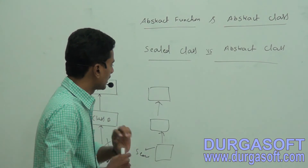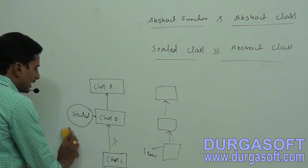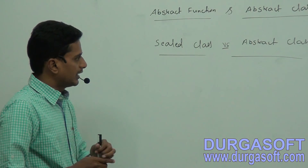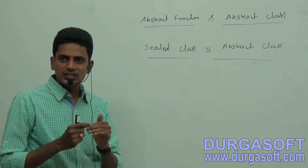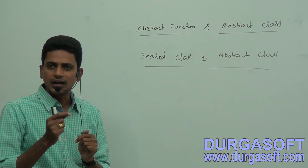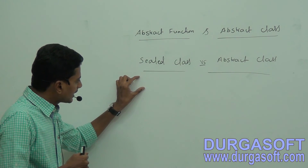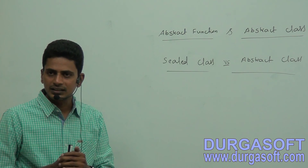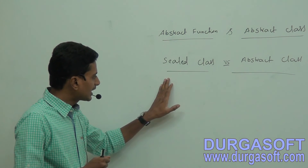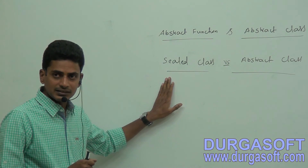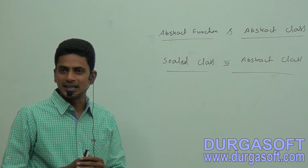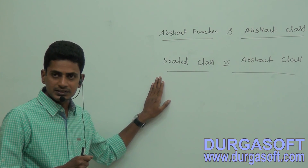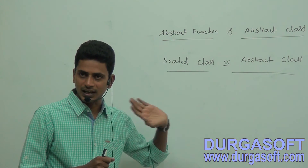Now sealed class versus abstract class: A sealed class is a class from which it is not possible to create or derive a new class, while an abstract class is a class which contains one or more abstract functions. To make a class sealed we use the 'sealed' keyword; to make a class abstract we use the 'abstract' keyword. Sealed class cannot act as a base class, but abstract class can be a base class. Sealed class is always the bottom-most class, while abstract class is not.